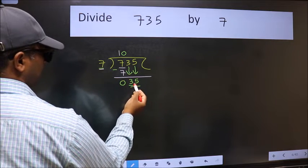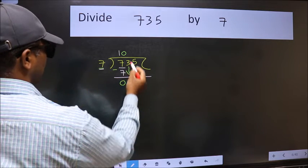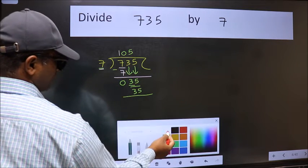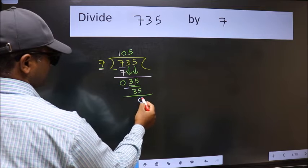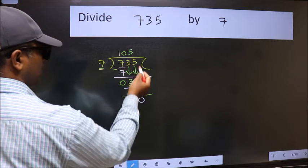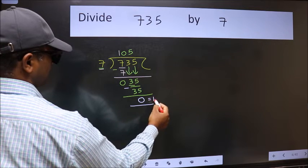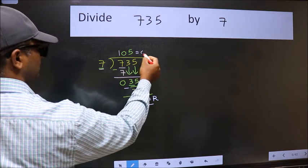Now 35. When do we get 35 in 7 table? 7 times 5 is 35. Now we should subtract. We get 0. No more numbers to bring it down. So we stop here. This is our remainder and this is our quotient.